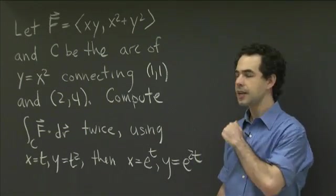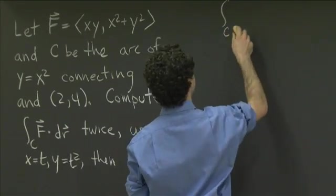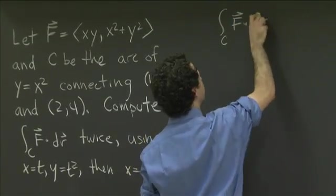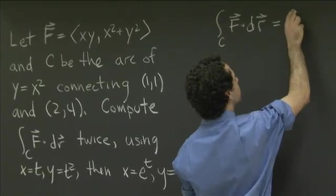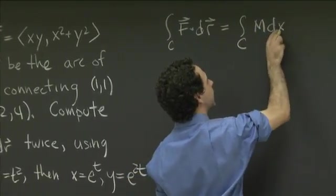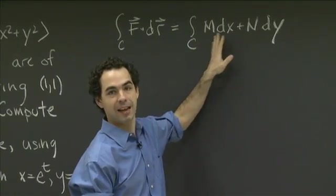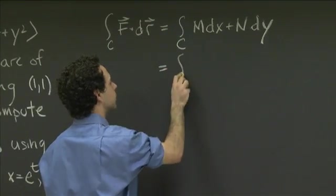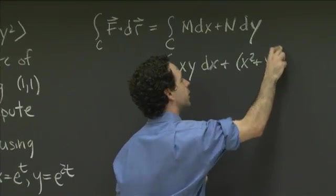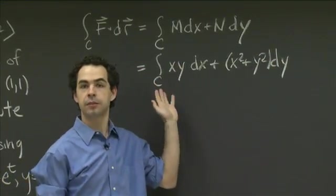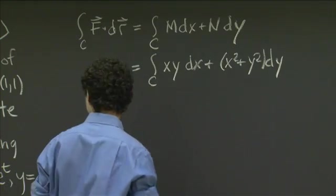So let's get started. We want to compute a line integral of a vector field F. So we know that the integral over a curve C of F dot dr, usually we write F equals M, N. The two components are M and N. So in this case, this is going to be equal to the integral over C of M dx plus N dy. Now in our case, we know what F is. We know that F is the vector field x, y, x squared plus y squared. So this is equal to the integral over C of xy dx plus x squared plus y squared dy.